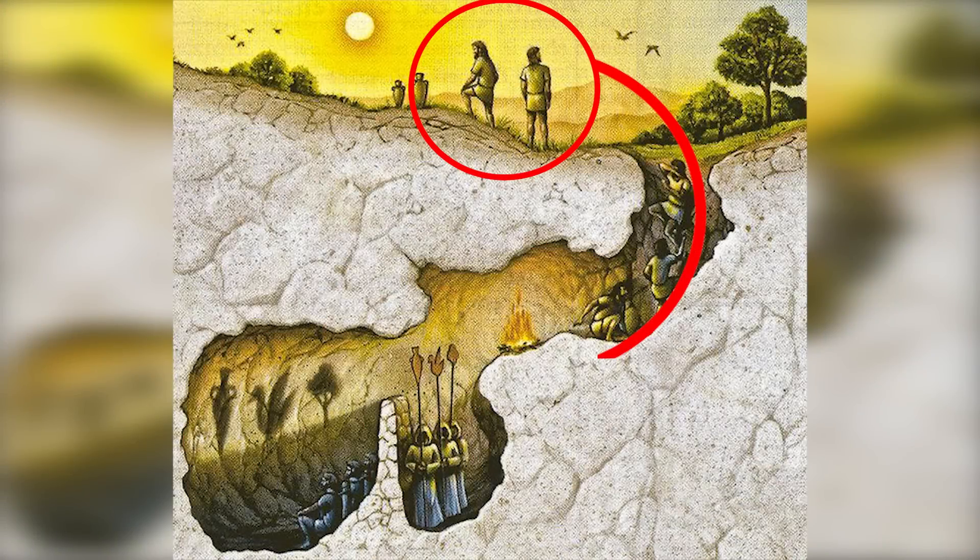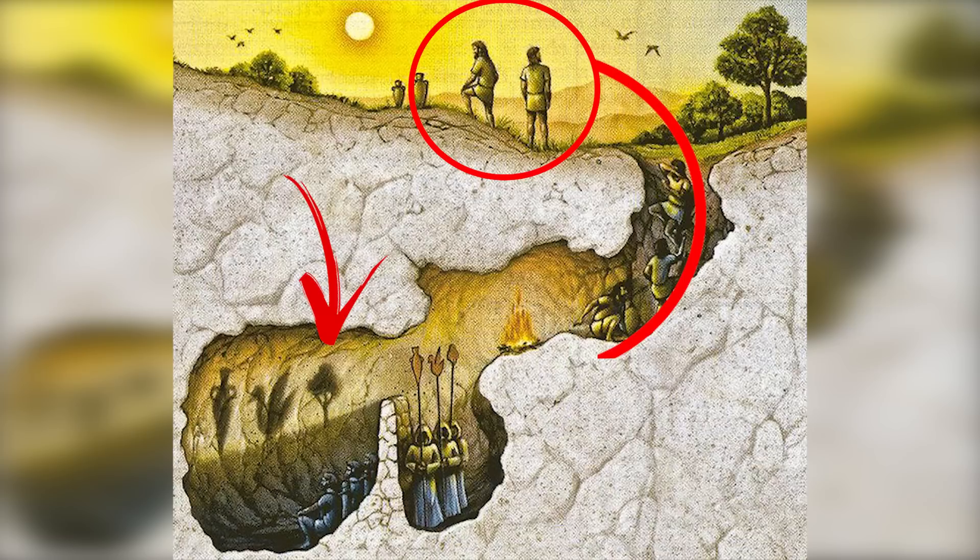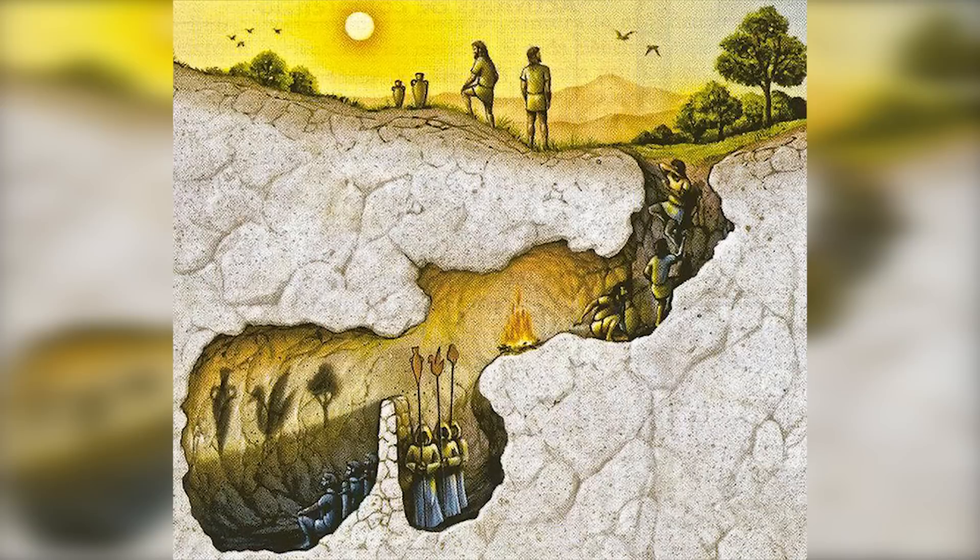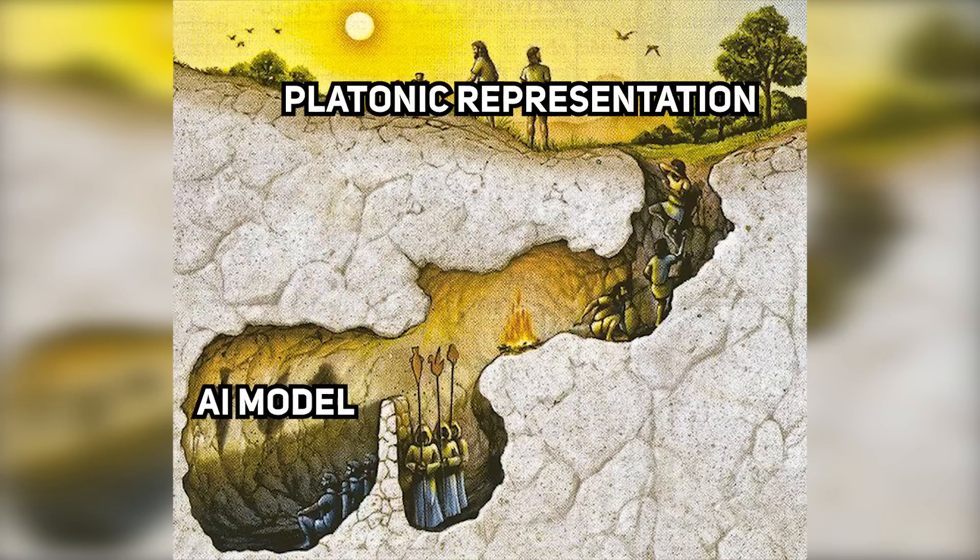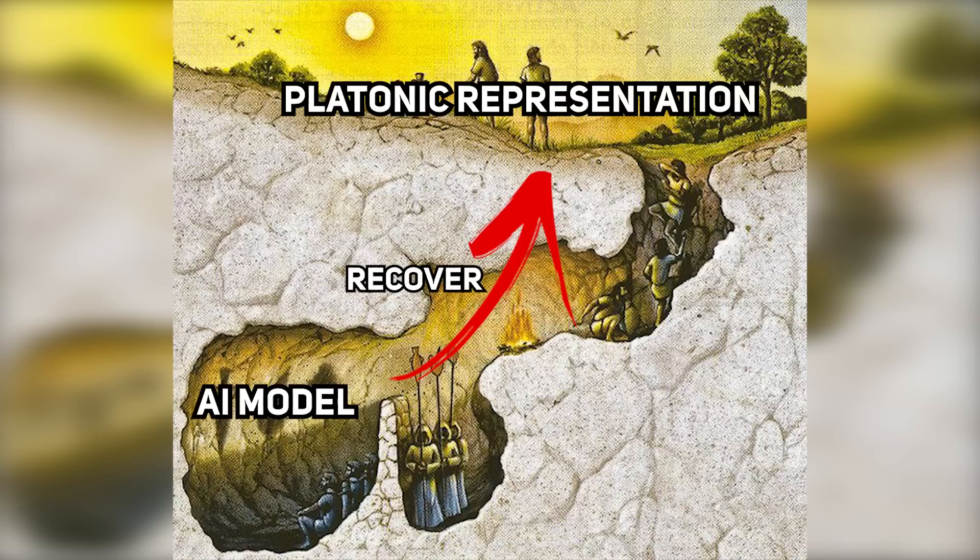Then, one prisoner escapes and discovers the outside world, realizing the shadows were mere illusions and gaining true knowledge of the world. And in this research case, the author draws similarity to Plato's idea, where platonic representation would refer to the true knowledge, and we humans are using the shadows on the wall to create an AI model that would be able to recover better representations of the actual world outside the cave.